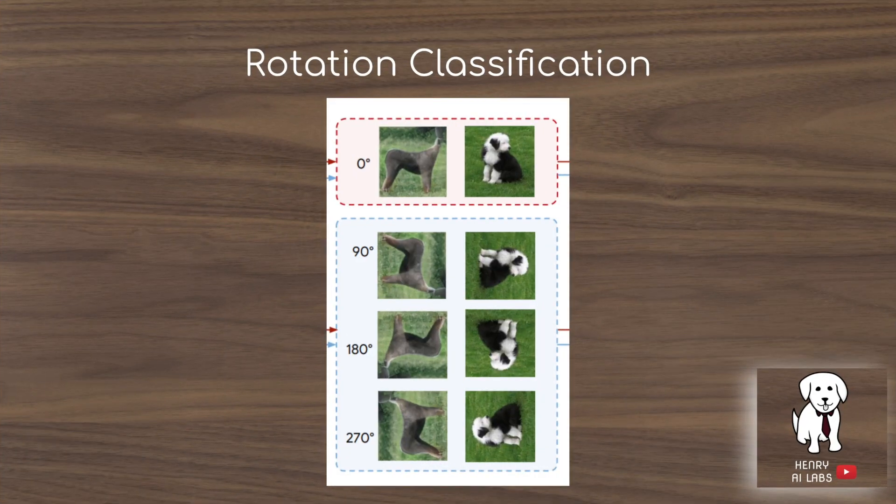Rotation classification is one of the most popular self-supervised learning tasks, in addition to things like relative patch location, colorization, super resolution, and jigsaw puzzle tasks. The idea is you take an image and either don't rotate it at all, or rotate it 90, 180, or 270 degrees, and then have a network predict how much the image has been rotated.